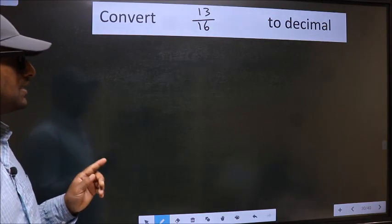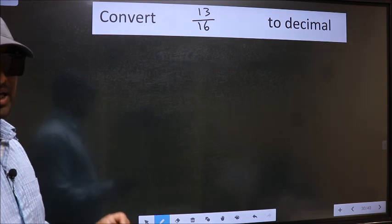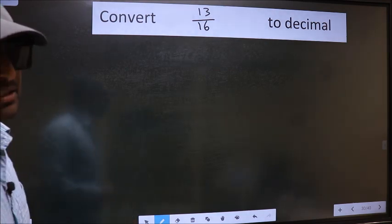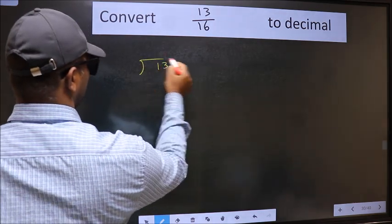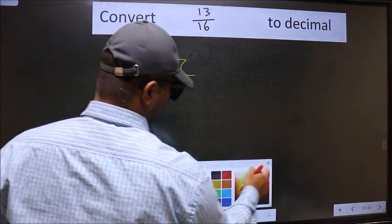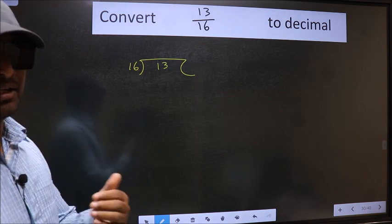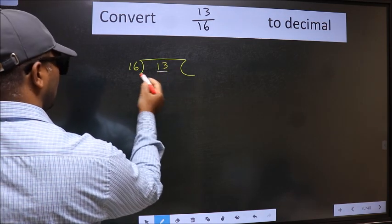Convert 13 by 16 to decimal. To convert to decimal we have to divide. To divide we should frame it in this way: 13 here and 16 here. This is your step 1.